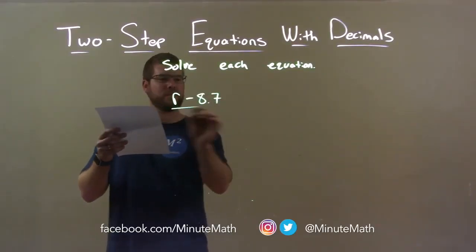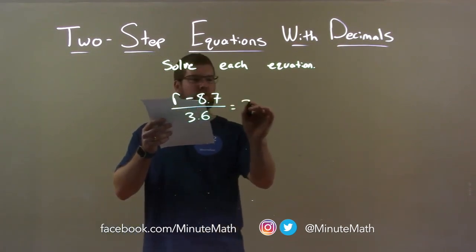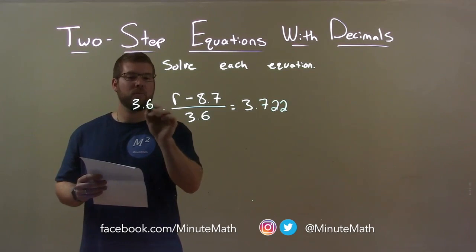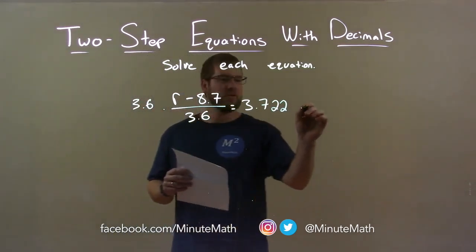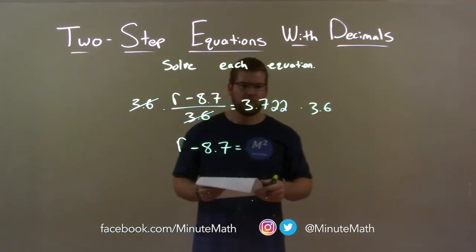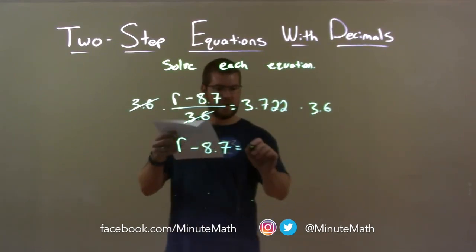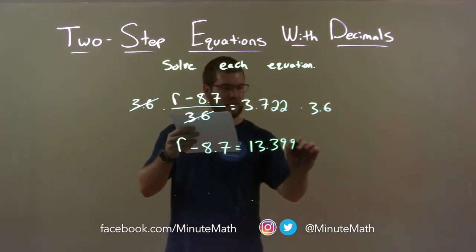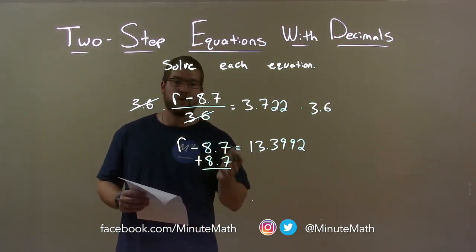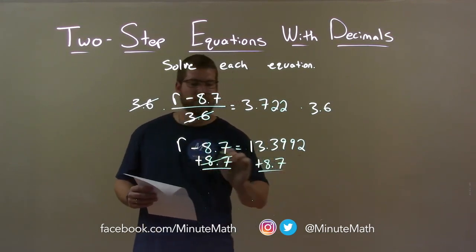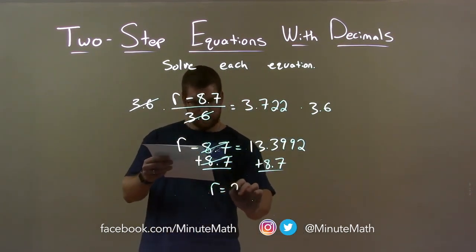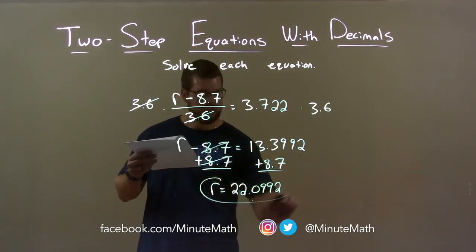r minus 8.7 over 3.6 equals 3.722. I want to get r by itself. First I'm going to multiply both sides by 3.6 — since I'm dividing by it, the opposite of division is multiplication. The 3.6s cancel on the left, giving me r minus 8.7 on the left. On the right, 3.722 times 3.6 is 13.3992. Now I still want to get r by itself — it's being subtracted by 8.7. If I add 8.7 to both sides, opposite of subtraction is addition, the 8.7 cancels. 13.3992 plus 8.7 is 22.0992. And there we have our final answer.